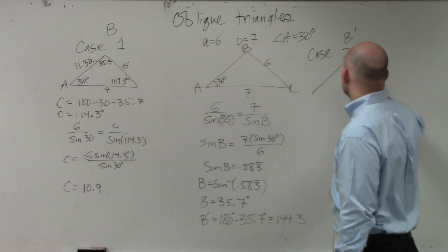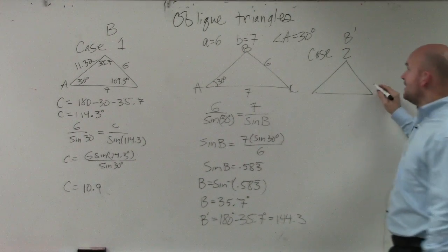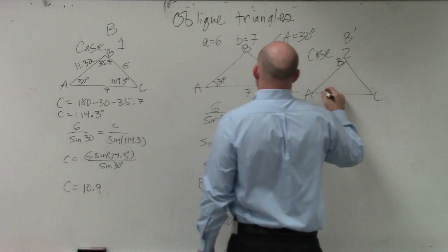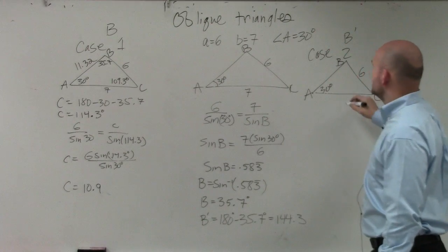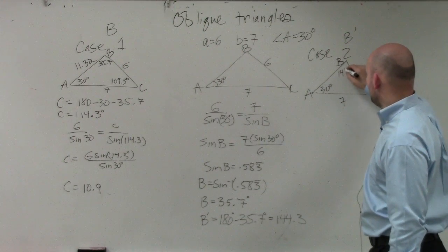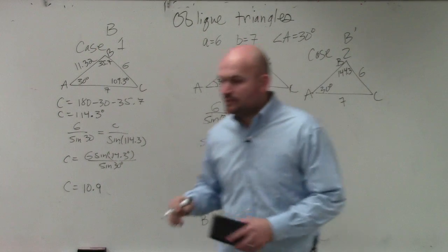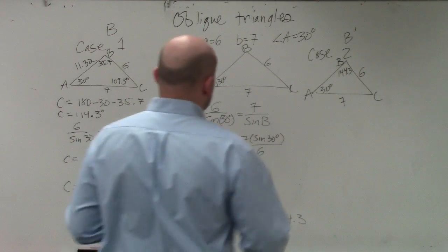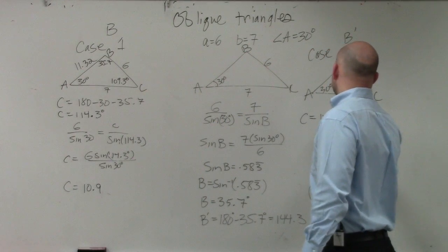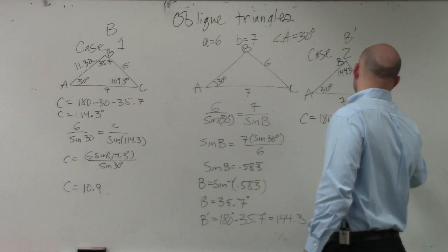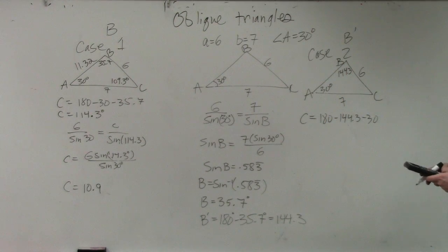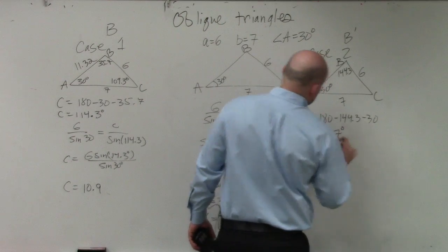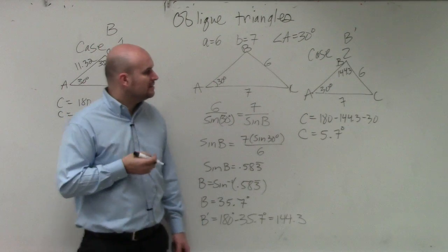So for B prime, our triangle looks a little bit differently. For B prime, we now have A is 30 degrees, 6, B is 7, and then we're saying 144.3. Okay? So now, when we're looking at this problem, now we just need to figure out our C. So we do C is equal to 180 minus 144.3 minus 30 degrees. So we do 180 minus 144.3 minus 30, and you get 5.7. So it's small, right? Really small angle, but it's possible.